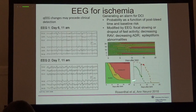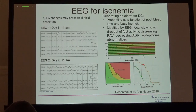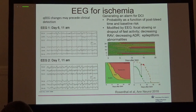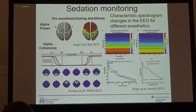Usually this is done in carotid endarterectomy surgery or subarachnoid hemorrhage models, because you have a baseline before the patient is ischemic and can detect the change. This work from Eric Rosenthal and Brandon Westover's group in Boston combined multiple quantitative EEG features to give a prediction of how likely it is on a given day that a patient will go into vasospasm — potentially a bedside high-alert system for developing ischemia.